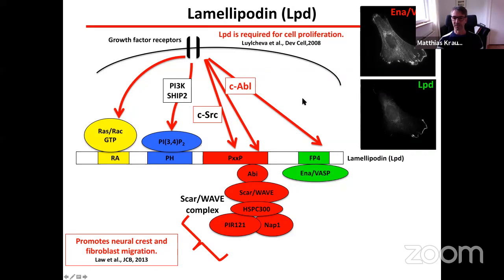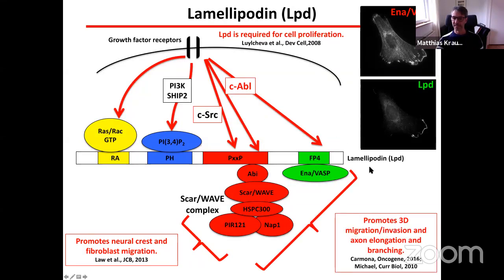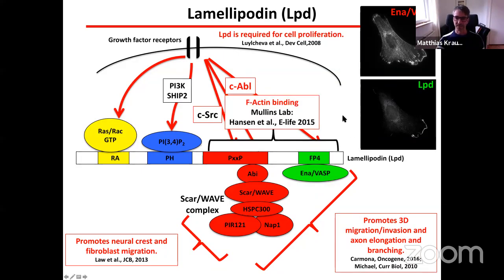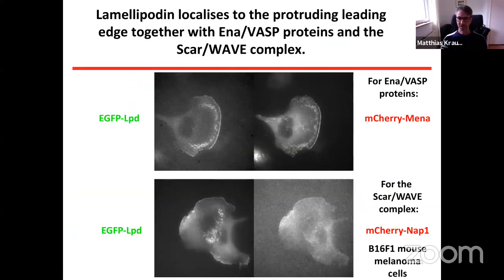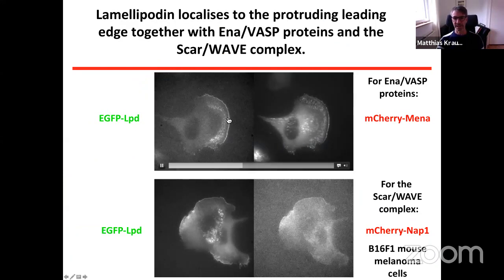Lamellipodin also co-localizes with VASP proteins at the very edge of lamellipodia and contains binding sites for direct interaction with VASP proteins. This interaction is promoted by Abl phosphorylation of lamellipodin and is required for actin filament elongation and branching. Interaction with both SCAR/WAVE and VASP proteins is required for lamellipodin's function to promote 3D migration and invasion. The Mullins lab showed the C-terminus of lamellipodin contains binding sites for F-actin, and we've found that lamellipodin is able to recruit endophilin, which mediates clathrin-independent endocytosis.